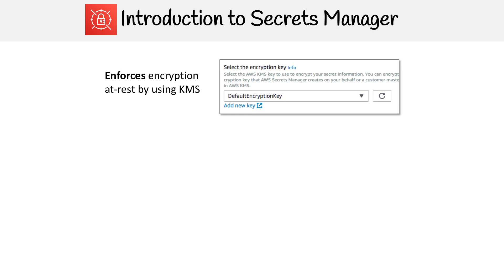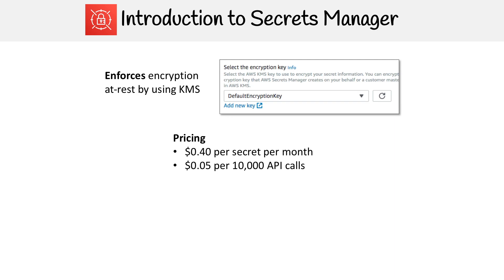The pricing is pretty simple: it's $0.40 USD per secret per month. Some people don't like Secrets Manager because of that cost, since you can pretty much use Parameter Store for free — but you have to decide what makes sense for you. It's also half a cent per 10,000 API calls.